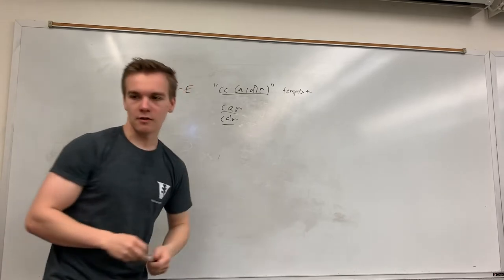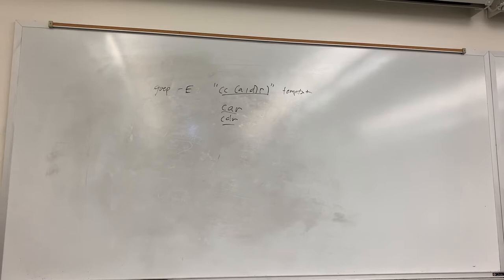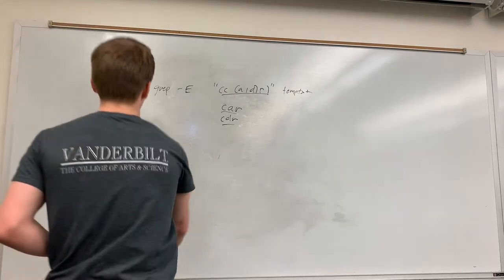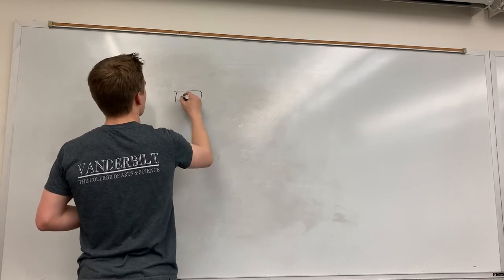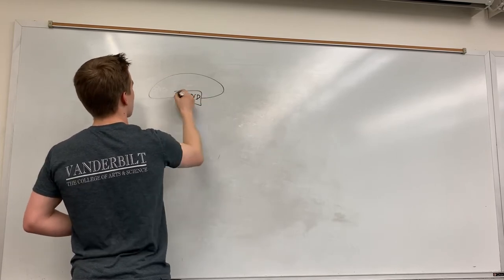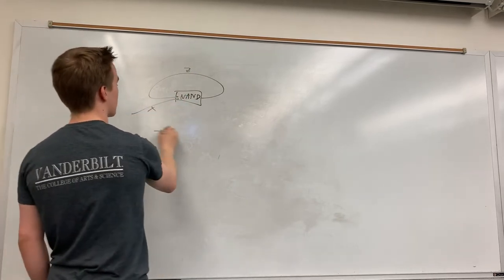5c says: consider a circuit consisting of one NAND gate and two wires. Z is the output of the NAND gate and also one of its inputs. The other input of the NAND gate is X. For each of the four possible configurations, say whether it is stable. So we have one NAND gate whose output Z is also its input, and X is the other input. Let's make a truth table.